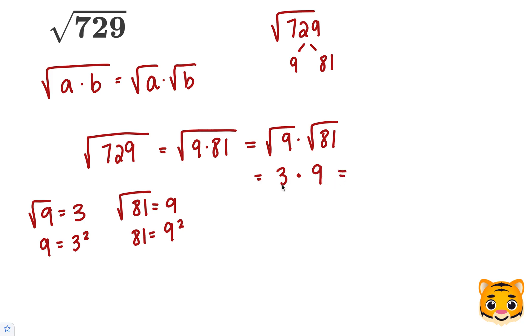We can then simplify this by multiplying them together. 3 times 9 is equal to 27. This means the square root of 729 is equal to 27.